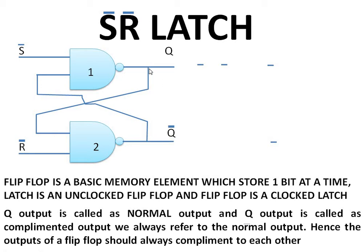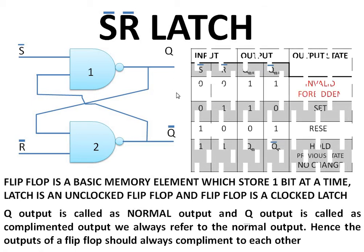The output of the first gate is taken as a feedback input to the second. Similarly, the output of the second is taken as feedback to the first. This type of feedback circuit is called cross-coupled feedback. Usually, the state of the flip-flop is mentioned with respect to the normal output.